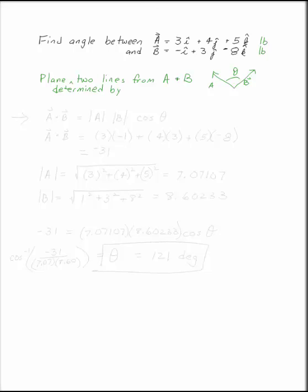Luckily, that's what the dot product is good for. The dot product of A and B is the magnitude of A times the magnitude of B times the cosine of the angle between them, in whatever plane is determined by those two lines.